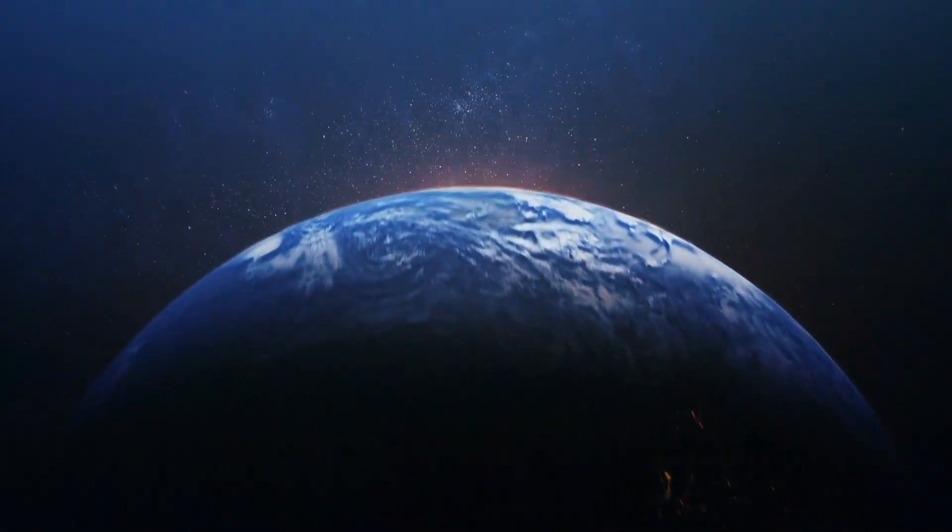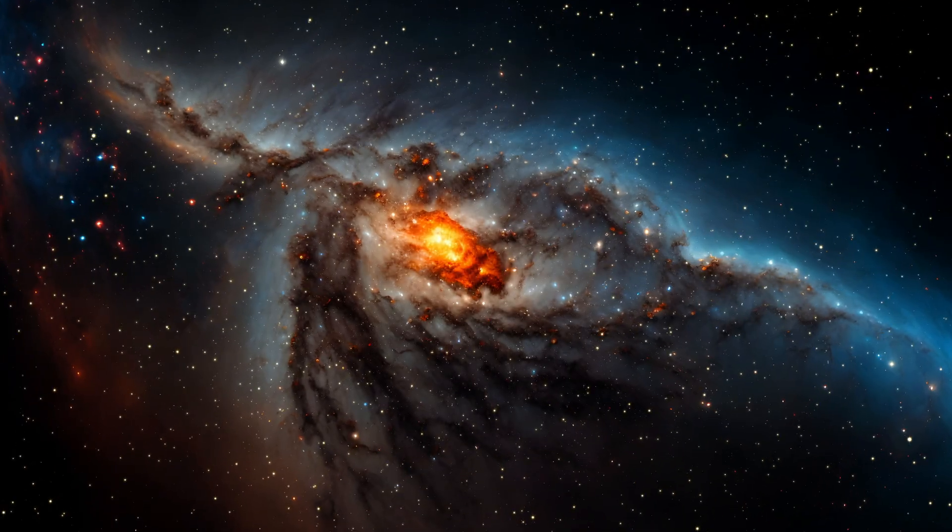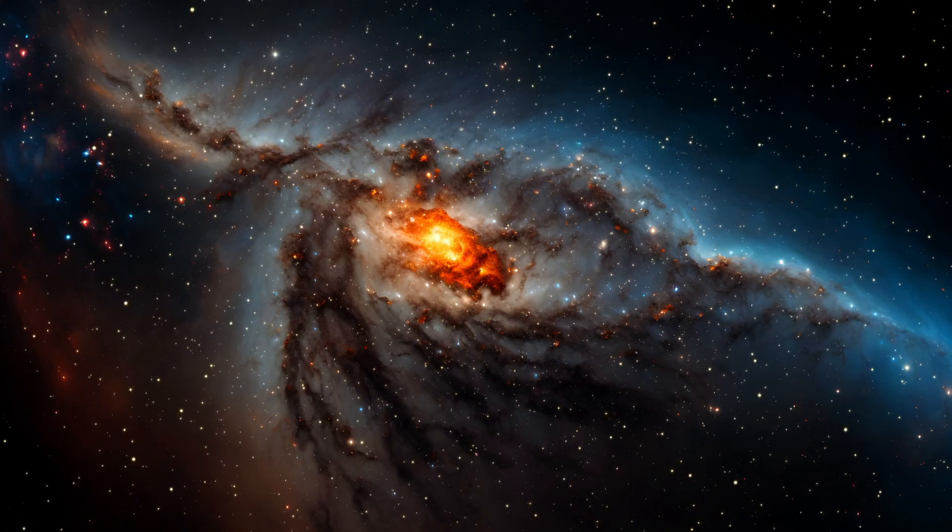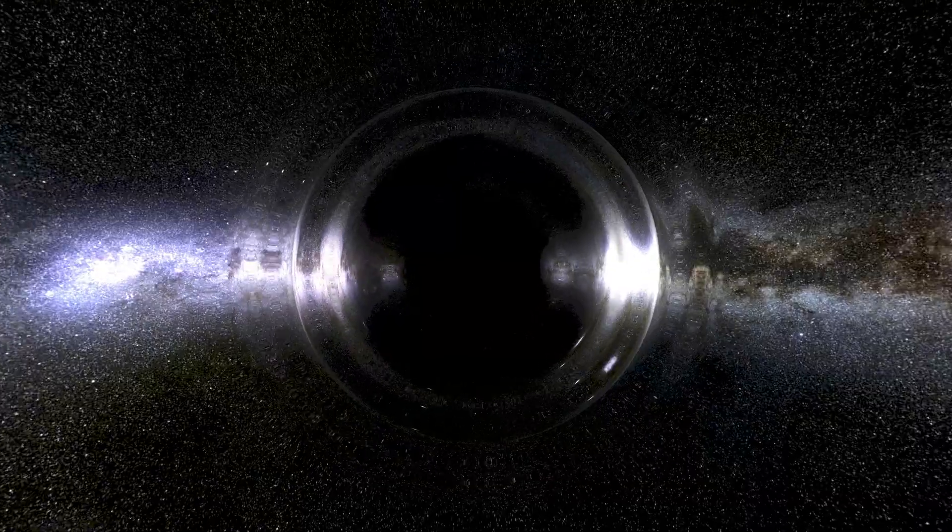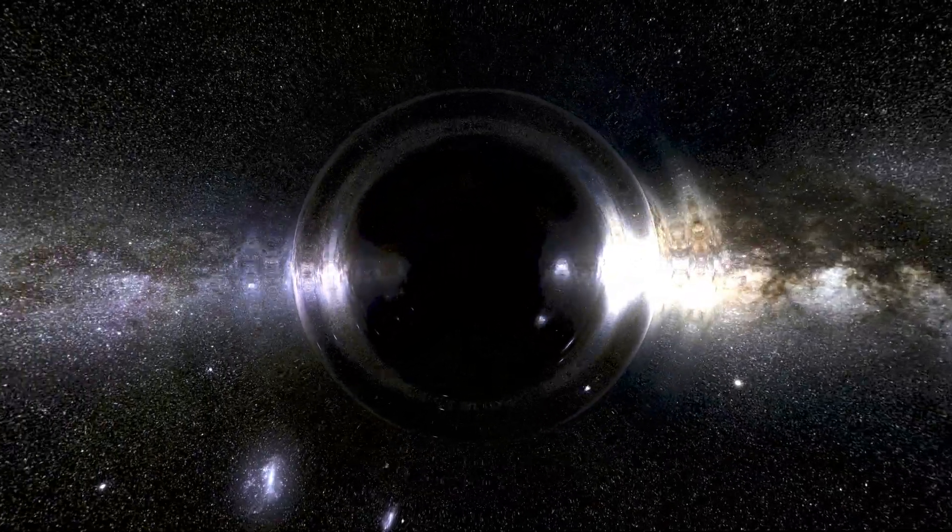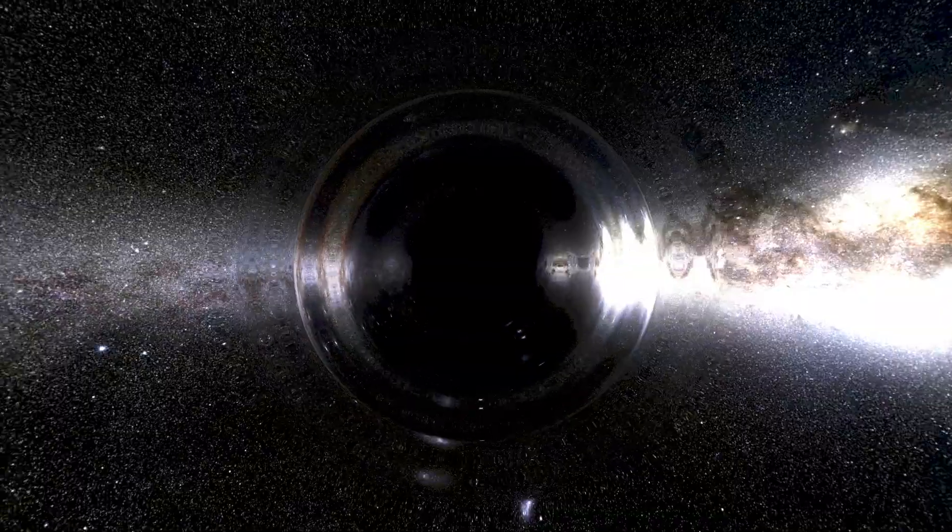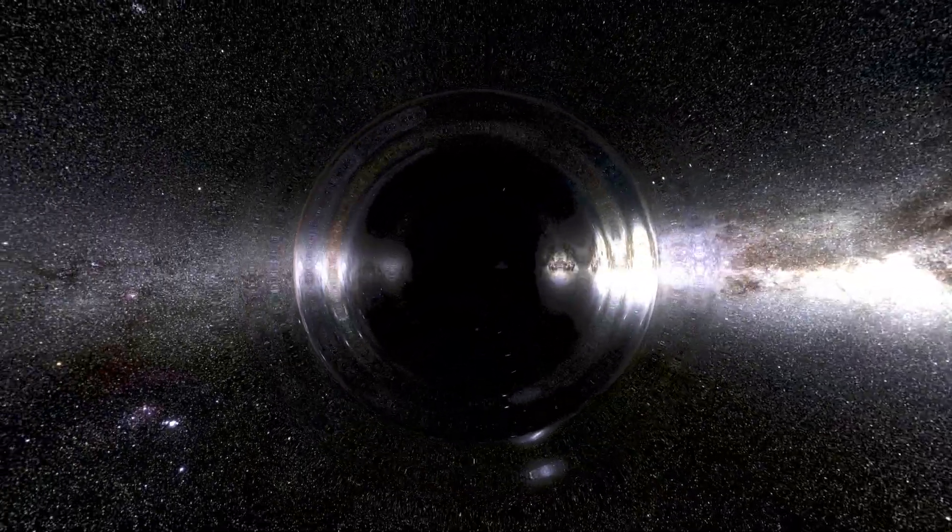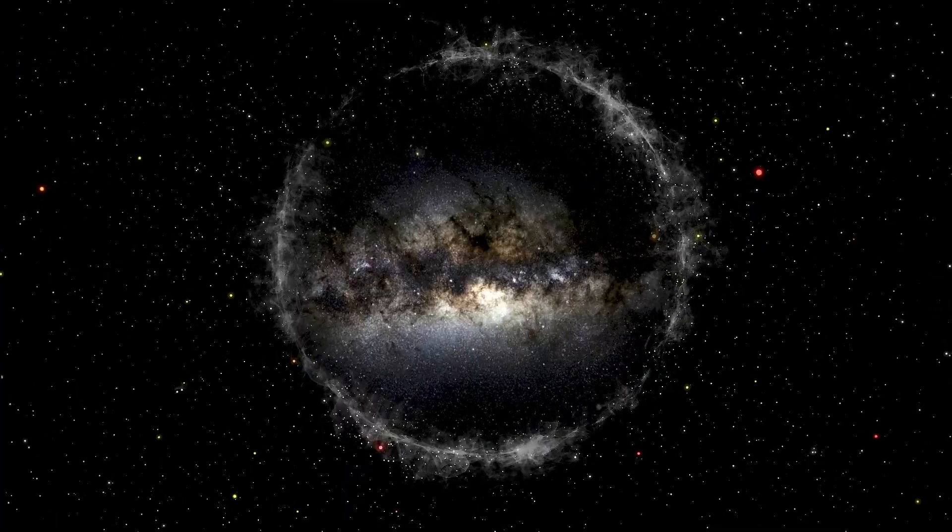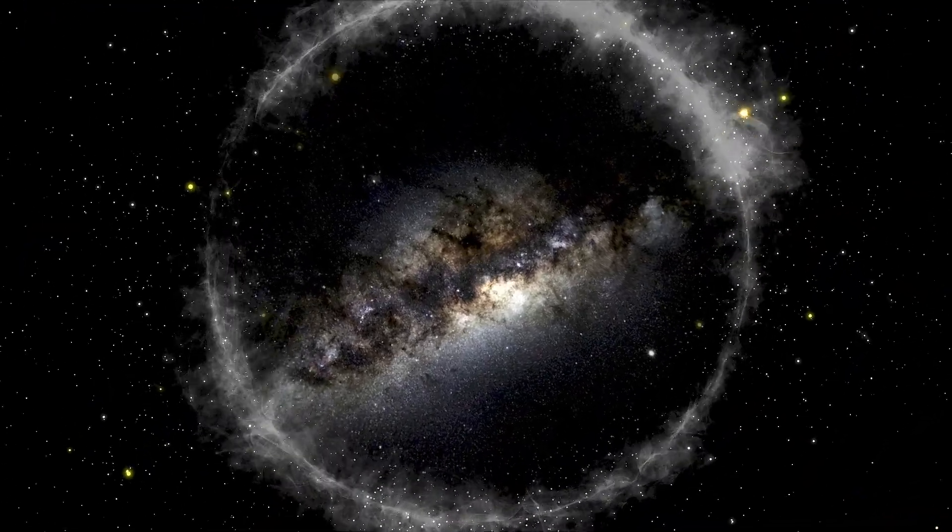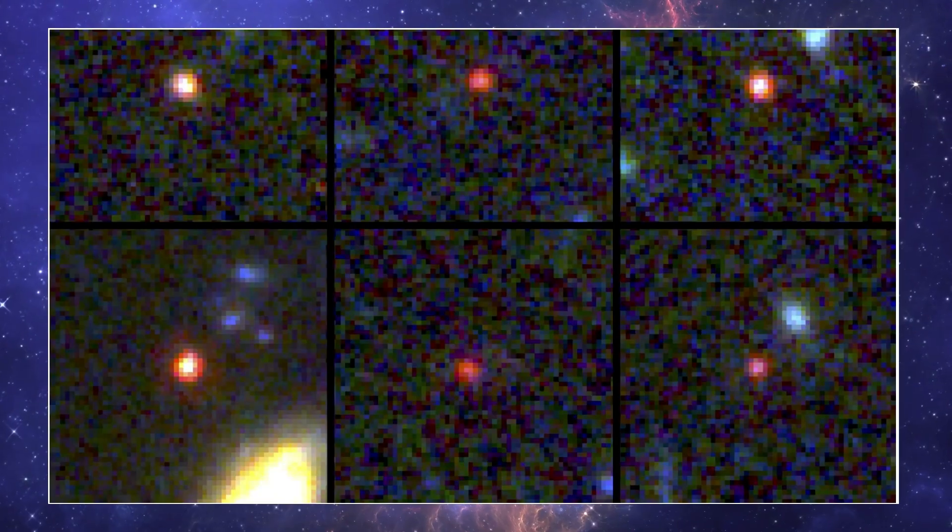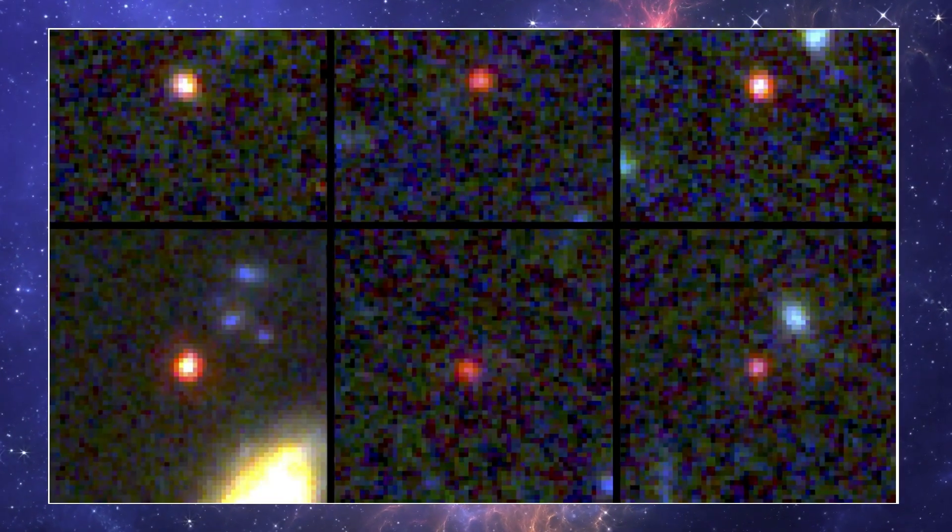For all its breakthroughs, Webb has also deepened the mysteries that already haunt cosmology. Chief among them, dark matter and dark energy. Webb's deep field images, combined with its ability to measure how light bends around massive objects, have provided some of the sharpest tests yet of gravitational lensing. By studying how galaxies warp the light behind them, astronomers can map the otherwise invisible scaffolding of dark matter. In some cases, Webb has revealed small-scale structures that don't quite fit the predictions of our best models.